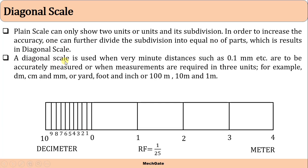A diagonal scale is used when very minute distances such as 0.1 millimeter are to be accurately measured, or when measurements are required in three units — for example, decimeter, centimeter, millimeter; or yard, foot, and inch; or hundred meter, 10 meter, and one meter.